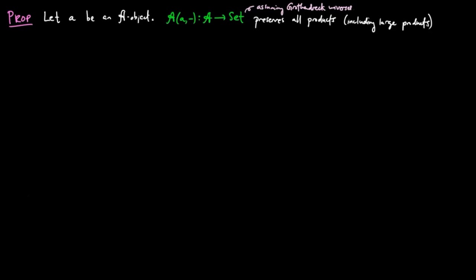And the reason why we're proving this now is that we need it for the following result. Let little a be an A object. Then the covariant Hom functor on A preserves all products including the large ones which exist in A, i.e., the map H induced by the set product is bijective.